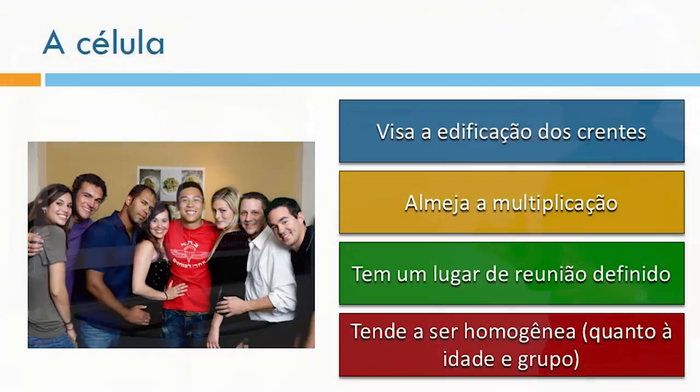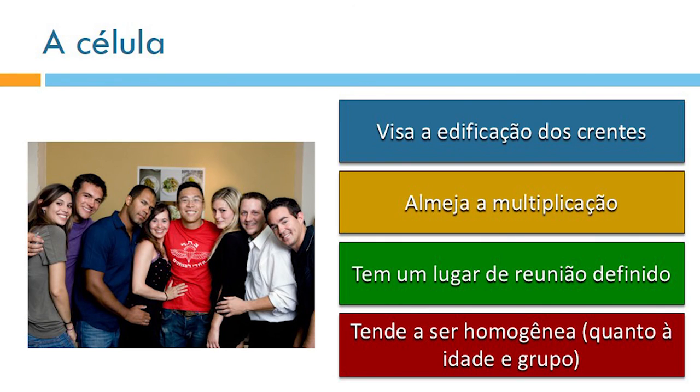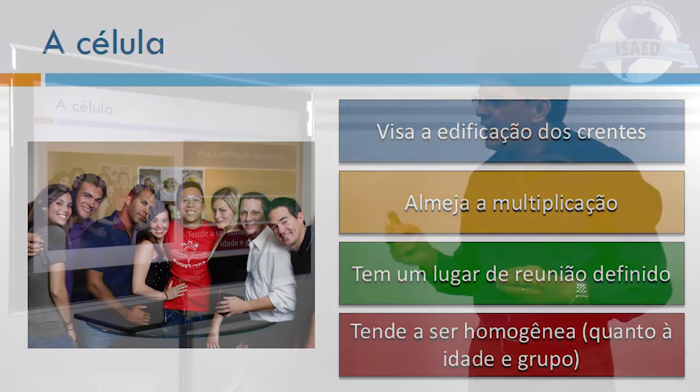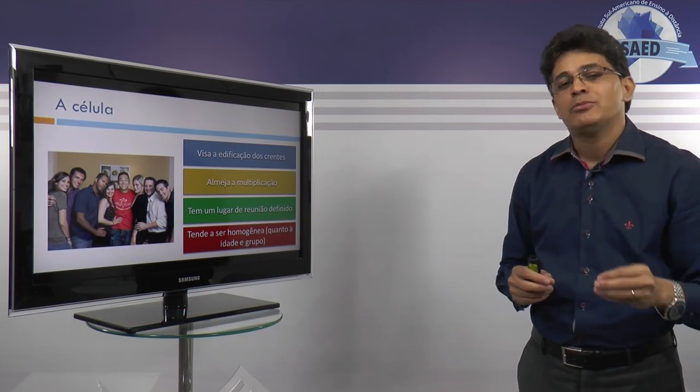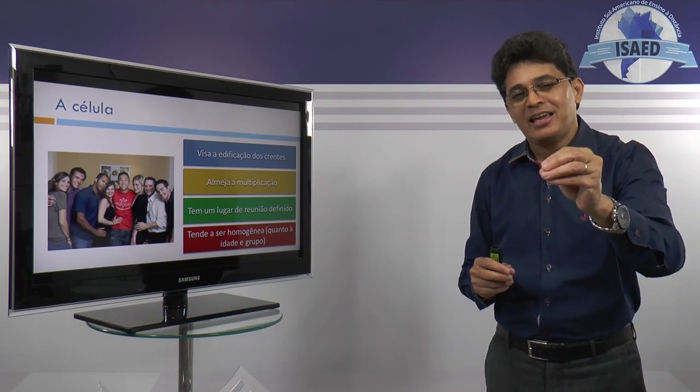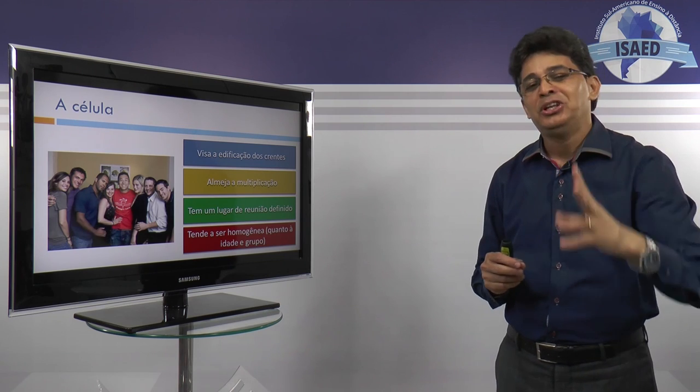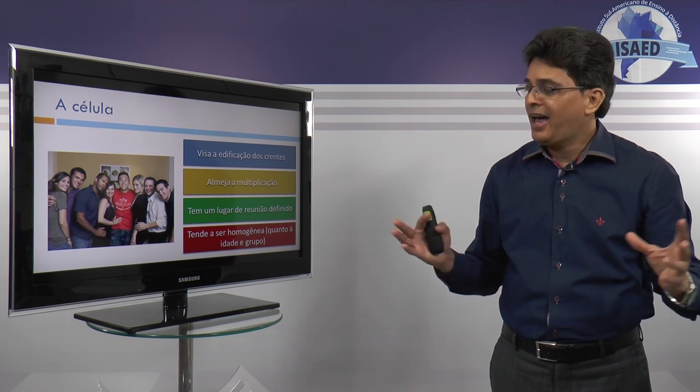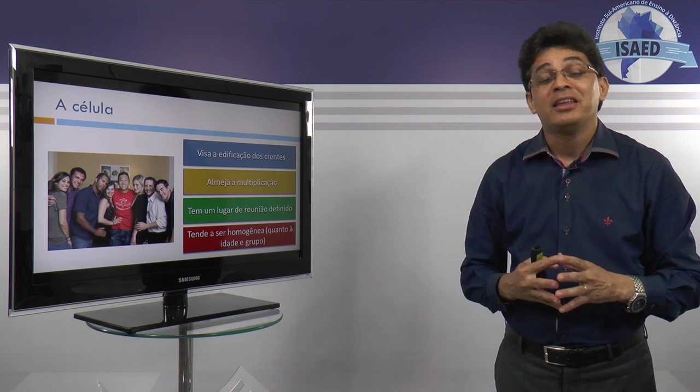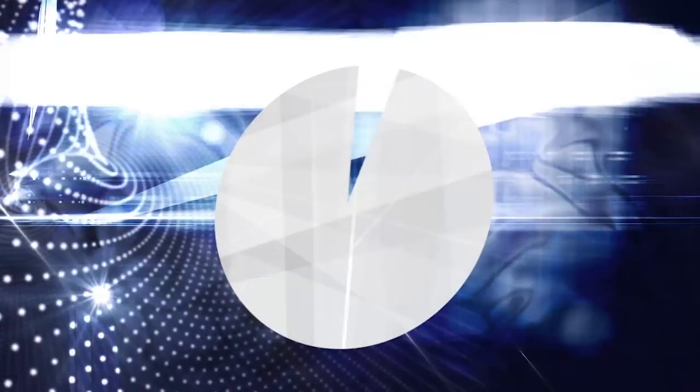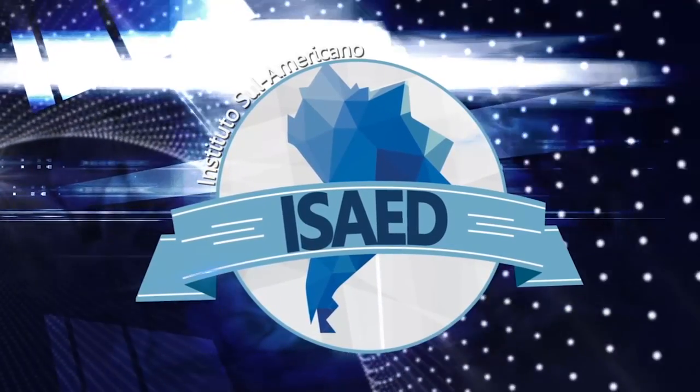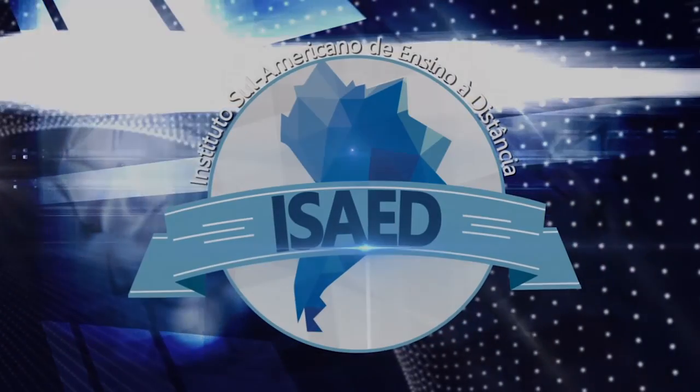Também a célula ela pode ser homogênea quanto a idade e ao grupo, mas sobre esse detalhe nós falaremos na próxima aula. Não sai daí, fique conosco que nós estaremos dando continuidade a esta bela aula do que é uma igreja em célula. Até a próxima aula.